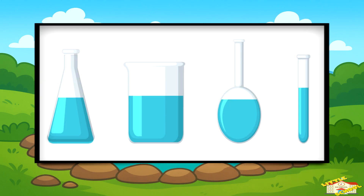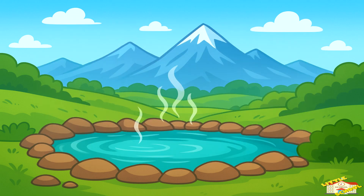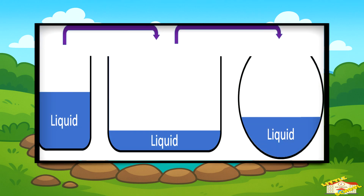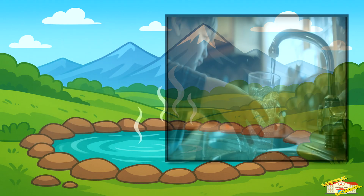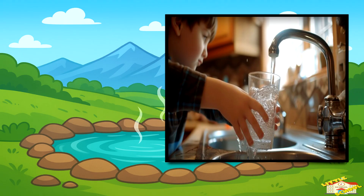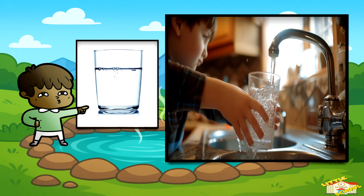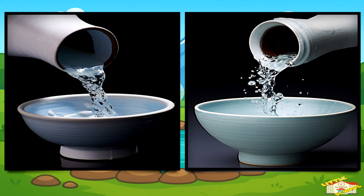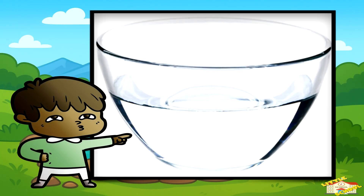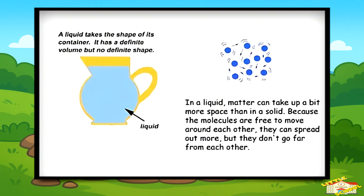Liquids are special because they don't have a shape of their own. Instead, they take the shape of the container they're in. For example, if you pour water into a glass, it looks like the glass. If you pour the same water into a bowl, it spreads out and looks like the bowl.